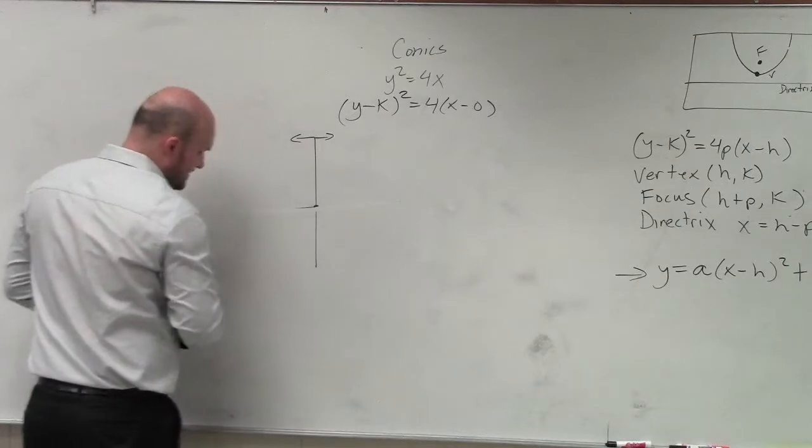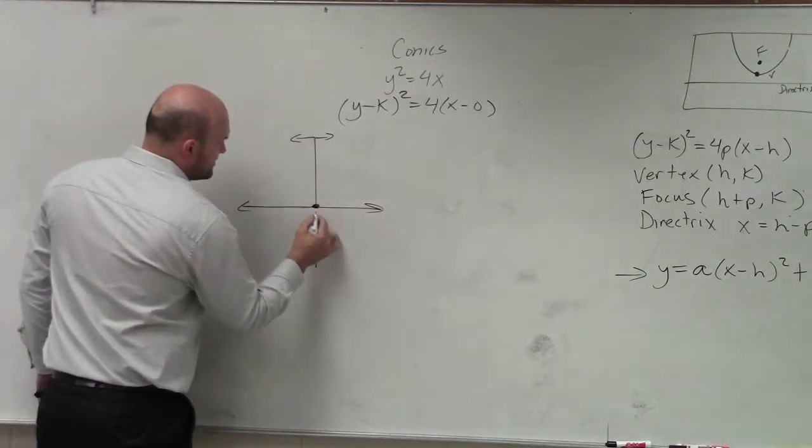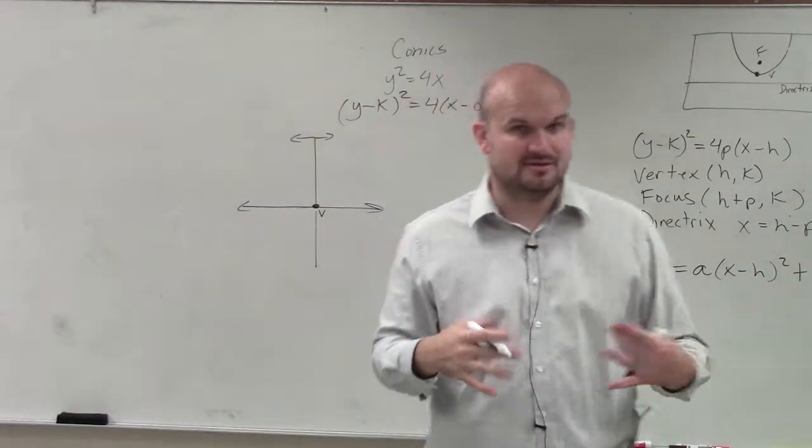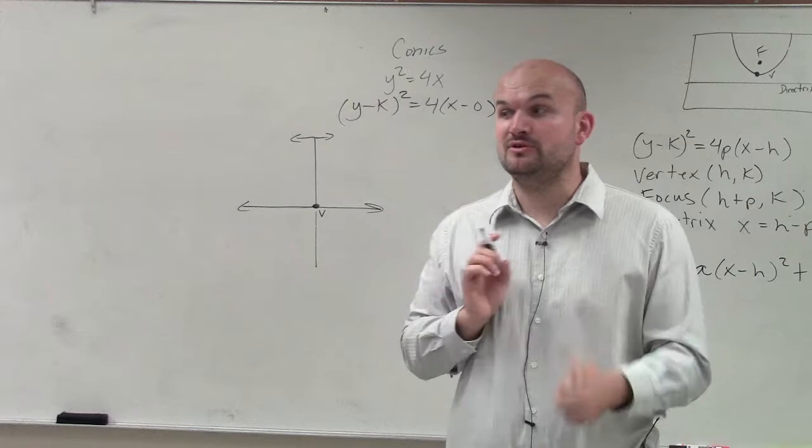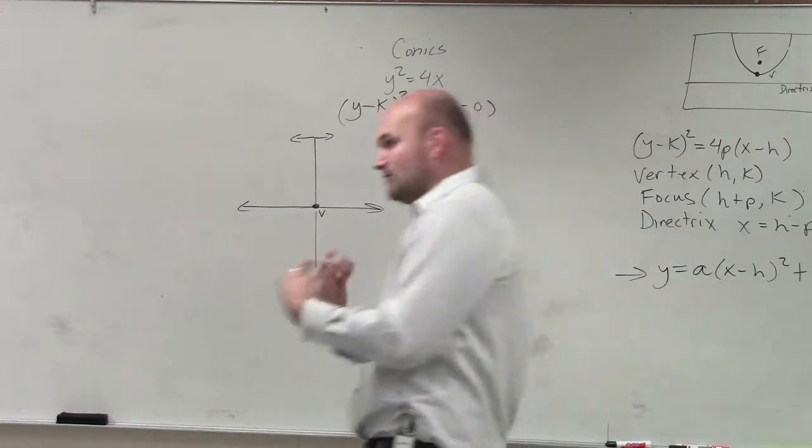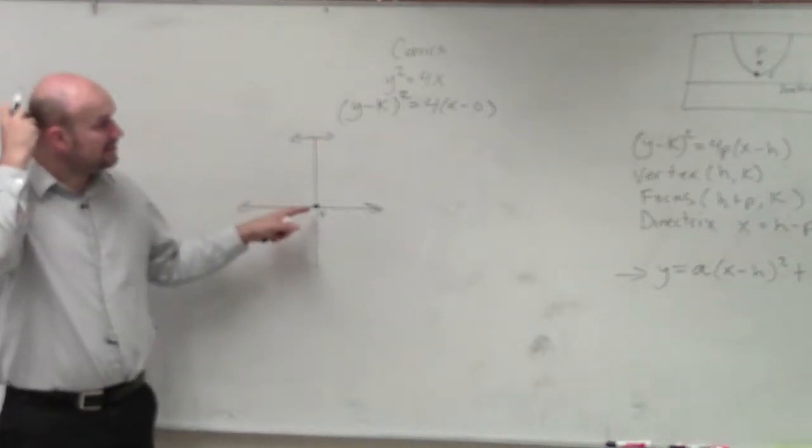What we're going to do is we need to find the vertex. I'm sorry, we already found the vertex. We're going to plot the vertex. We're going to write a little v so we know, hey, that's the vertex. Because guess what people do? People confuse the vertex and the focus all the time. So if you want a helpful tip, when you graph the vertex, just put a little v so you remember that's the vertex of the parabola.